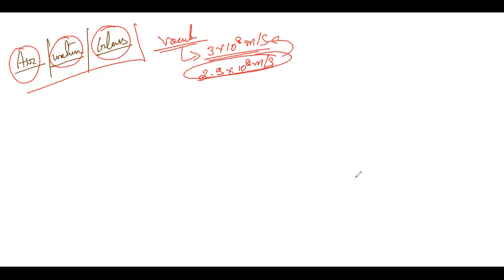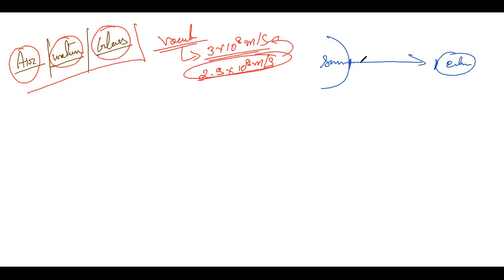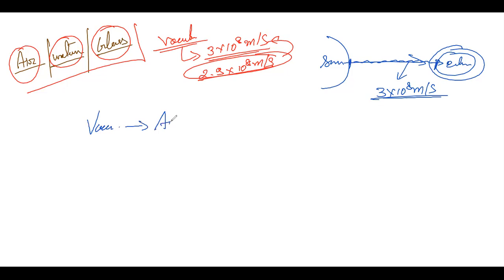A very good example of vacuum is the distance between the sun and the earth. When light rays travel from the sun towards the earth, they travel through vacuum, and at this point their speed is maximum — 3 × 10⁸ meter per second. As the light enters our atmosphere, we observe that the light ray changes its medium — from vacuum it comes into air.